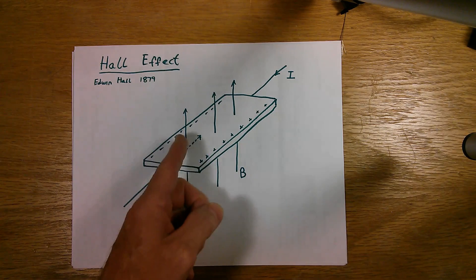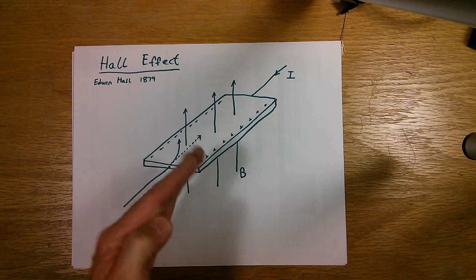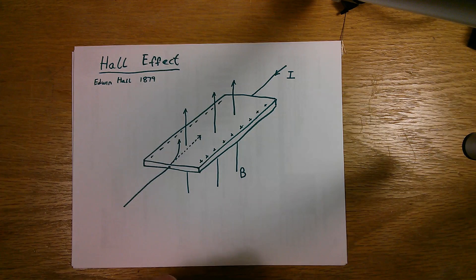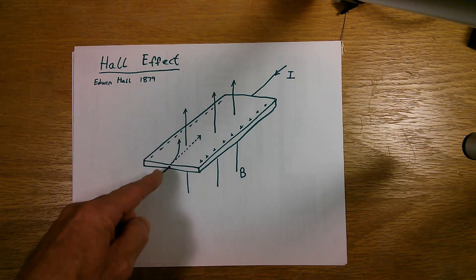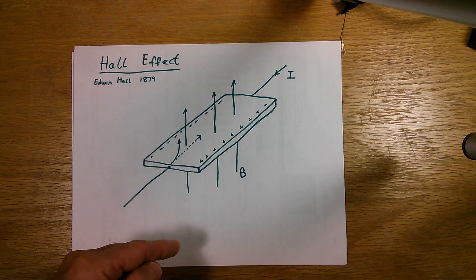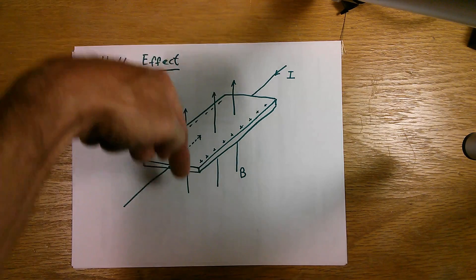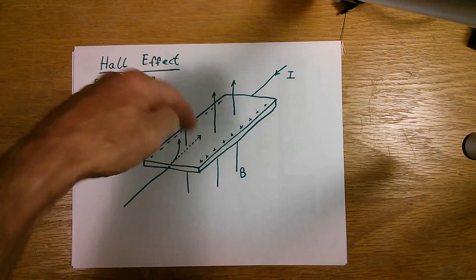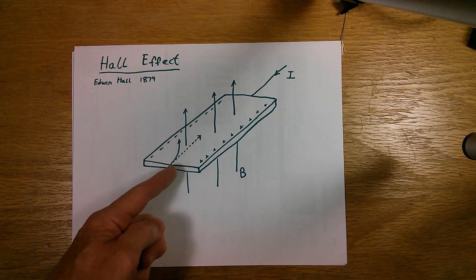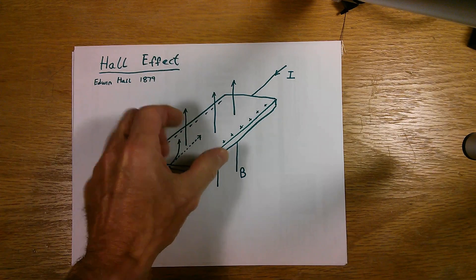So in this case, I've got it perpendicular, but if it's at an angle one way or the other, the effect on the electron's deflection will be less. If the field was going down through the slab of conductor, the electrons get deflected the other way, so the polarity will reverse.